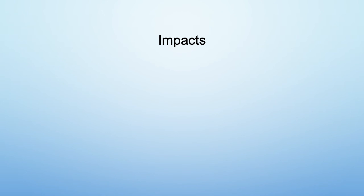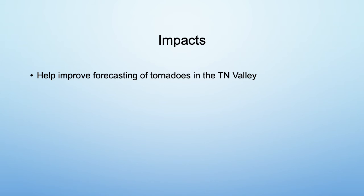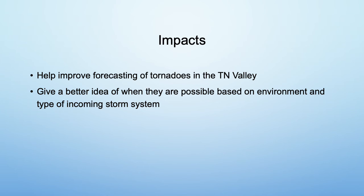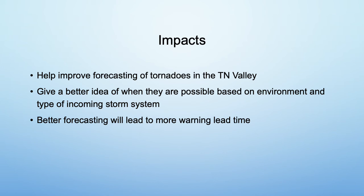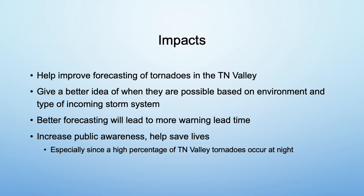Now I'll discuss the impacts of this research. I'm hoping it can help improve forecasting of tornadoes in the Tennessee Valley. It gives a better idea of when they are possible based on the environment and also the type of incoming storm system. Better forecasting will lead to more lead time on tornado warnings. A goal would be to increase public awareness in order to help save lives, especially since a high percentage of Tennessee Valley tornadoes occur at night when people are more easily caught off guard.